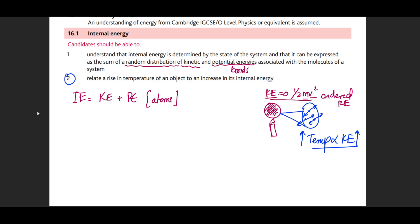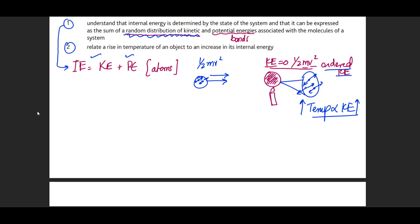The kinetic energy of atoms due to their motion is referred to as random kinetic energy — specifically of the atoms inside an object. For example, if you throw a ball in one direction, the whole object moves with kinetic energy in that direction, but its atoms are still vibrating. We differentiate ordered kinetic energy (whole object moving) from random kinetic energy (energy distributed among the atoms throughout the system).